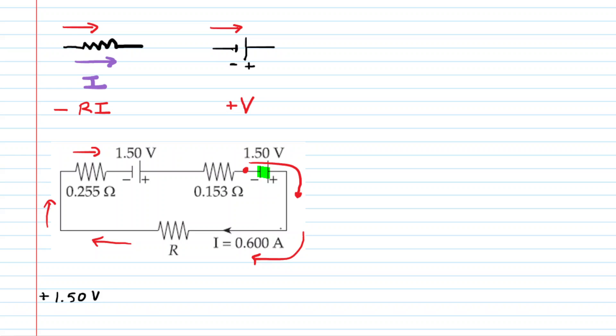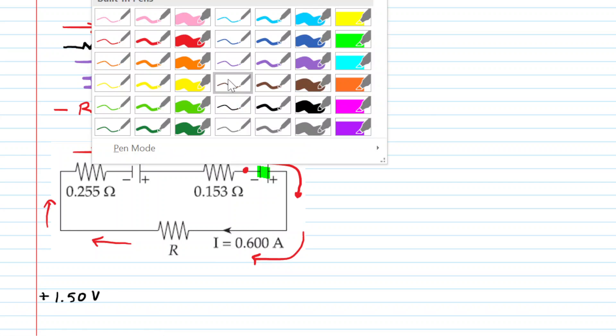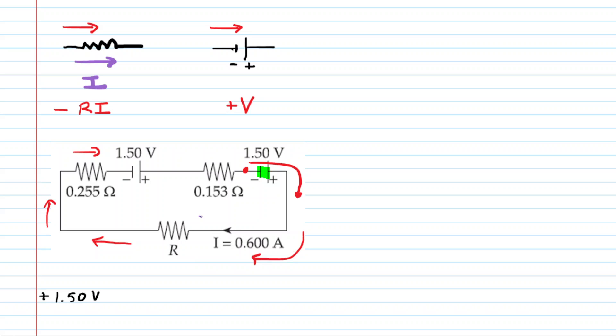Continuing through the loop, we move along until we encounter the resistor down here, and notice we are moving in the same direction as the current. Recall that the current is traveling on the lower section of the loop to the left. We are also moving to the left on our loop circuit here. The rules state that if you're moving in the same direction as the current, then you're going to have a negative potential change. We'll have a minus, and then you take the resistance and then multiply that by the current. The question states the current is 0.6 amps.